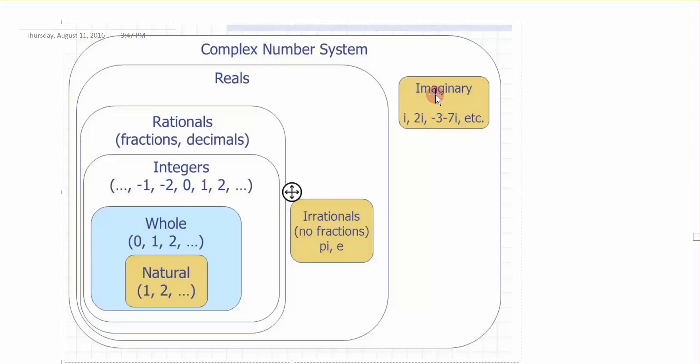Imaginary numbers are the ones where we have an i associated with that number value. When we combine reals with imaginaries, we get the complex number system. That's really what this section is going to be about.